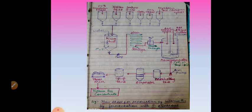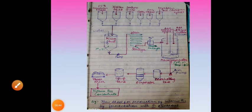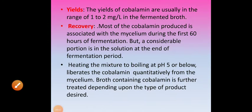Once the fermentation is over, the whole fermented beer is subjected to evaporation, syrup tank, and then drum dried, and then vitamin B12 is ready. But the extraction and recovery process, once the fermentation is over, varies with the type of B12 we want to produce — the form in which we want B12. So let us study that now.